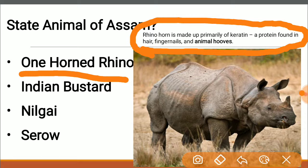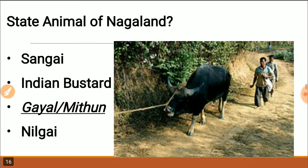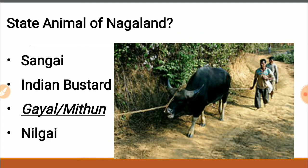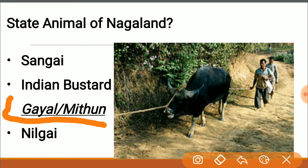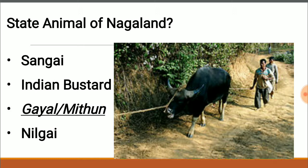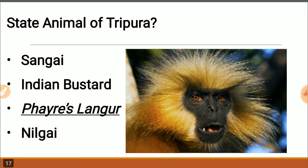The state animal of Nagaland is the Gayaal or Mithun — a form of bovine animal meaning cattle which can be domesticated. It is slightly bigger than the cows or buffaloes we are used to. It is said to be derived from or related to the Gaur, that wild buffalo found in the forests of the northeast and Himalayan region — the Gaur is considered the ancestor of the Gayaal or Mithun.